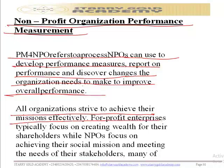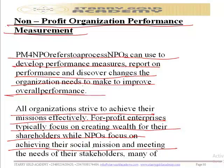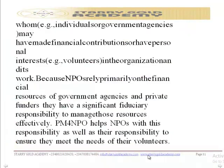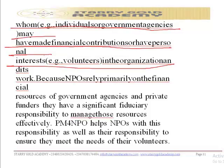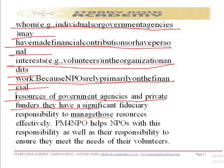All organizations try to achieve their missions effectively. For-profit enterprises typically focus on creating wealth for their shareholders, while non-profit organizations focus on achieving their social mission and meeting the needs of their stakeholders — many of whom are individuals or government agencies that have made financial contributions or have a personal interest in the organization and its work. Because NPOs rely primarily on financial resources from government agencies and private funders, they have a significant fiduciary responsibility to manage those resources effectively.